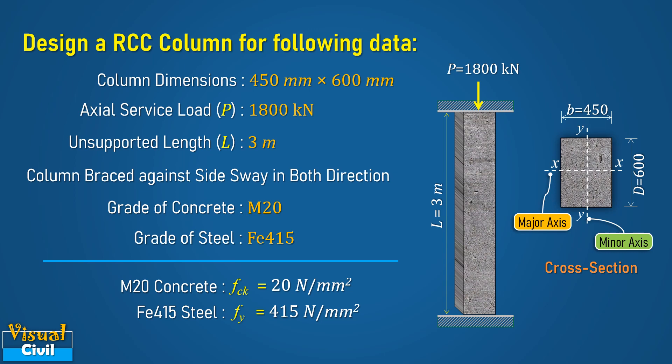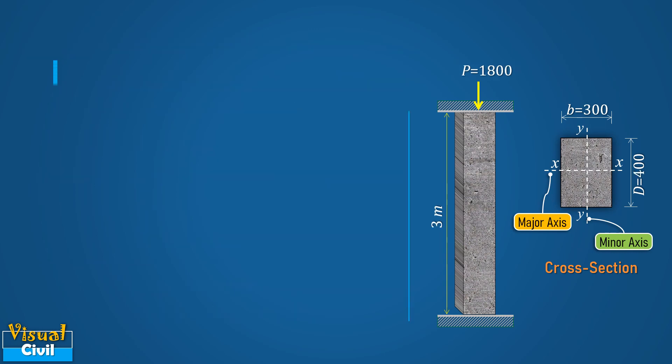In the problem statement, size of the column is given. Hence, in design, it is required to find only reinforcement. Let us find out first whether the given column is short or slender.